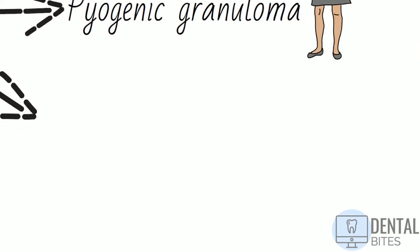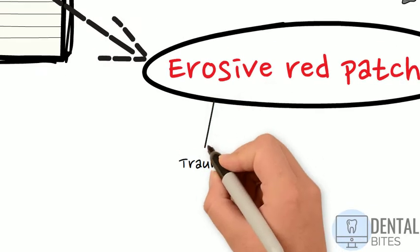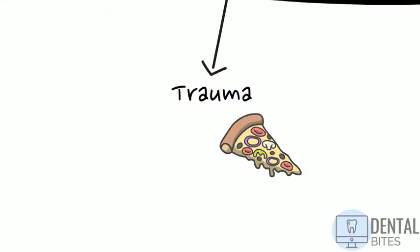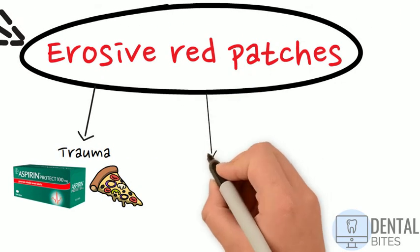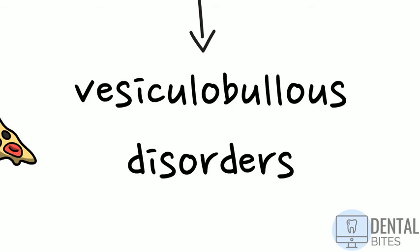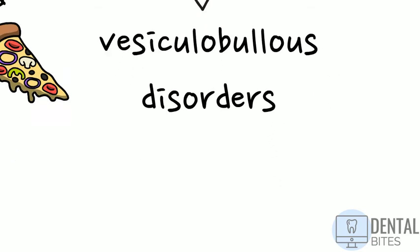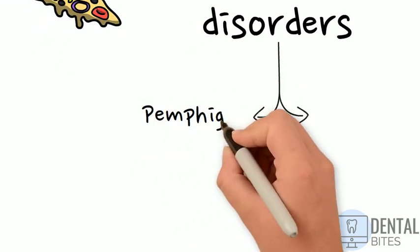We're now going to touch on erosive types of red lesions. This can be as simple as a burn from heat — for example burning the roof of your mouth eating a hot slice of pizza — or you might also see chemical burns in patients. The classic example of this is aspirin burn, where patients hold aspirin tablets in their mouth in an attempt to relieve dental pain but end up getting painful red erosions and ulcers. Other erosive examples include vesiculobullous disorders, which are a group of diseases characterised by blisters and erosions that can affect the skin and mucous membranes. Some examples we see in the mouth are pemphigus and pemphigoid, which are both autoimmune conditions.